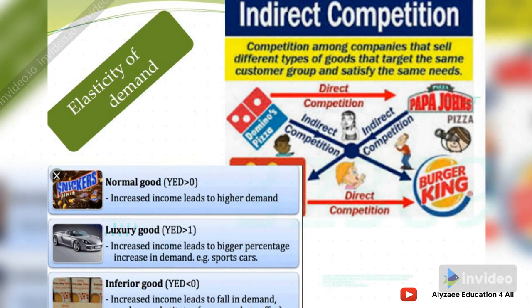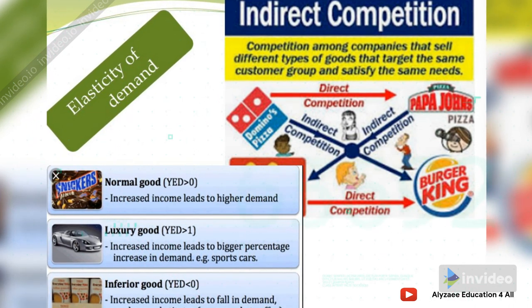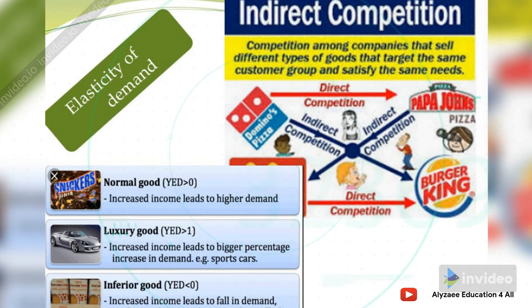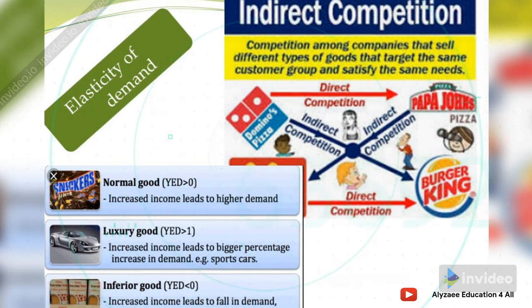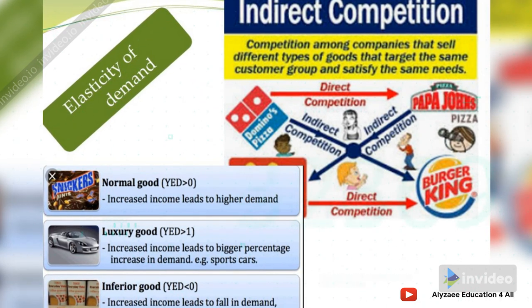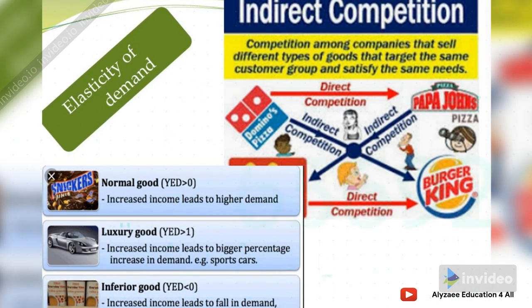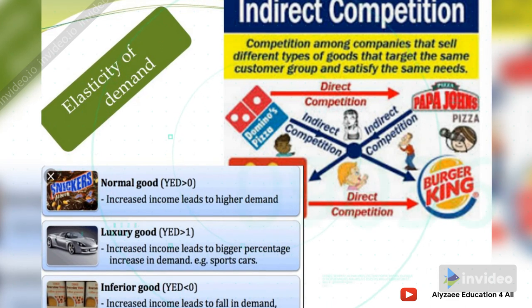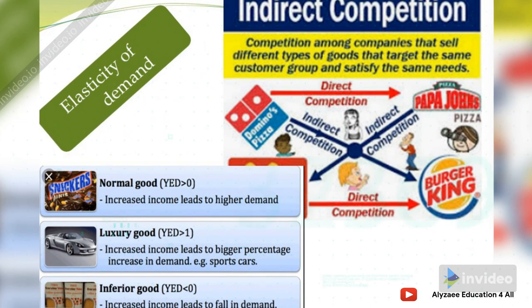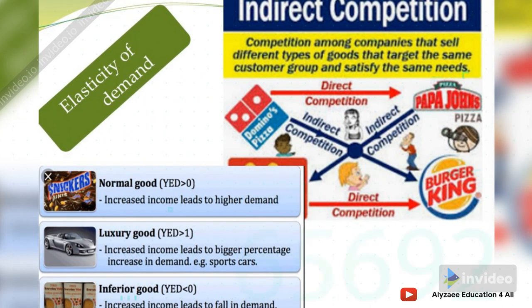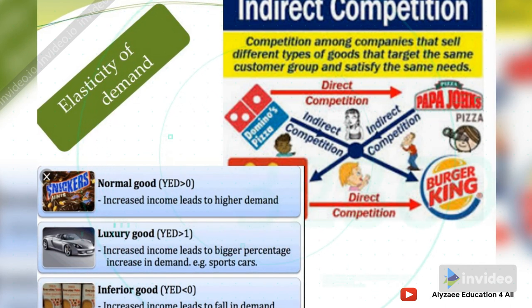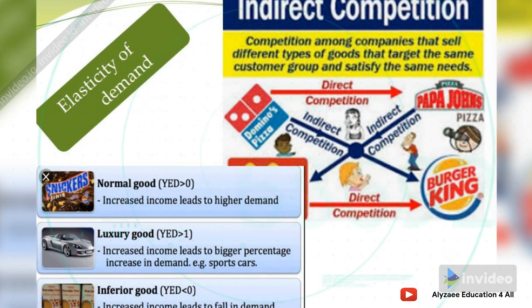When income elasticity is greater than one, this moves toward the definition of luxury goods like sports cars, jet planes, or farmhouses. Inferior goods were illustrated with the example of switching from an old-fashioned TV to an LED, or in a supermarket switching from juices to famous and expensive soft drinks as income increases.